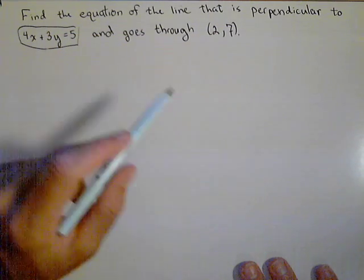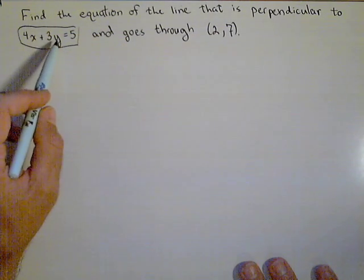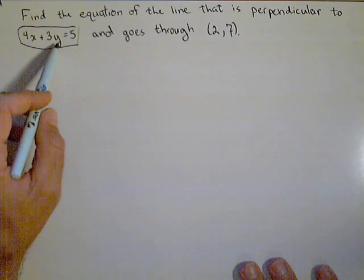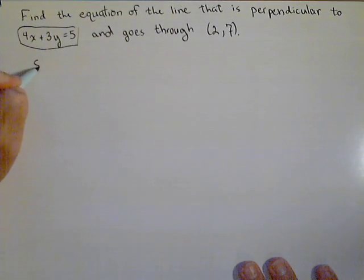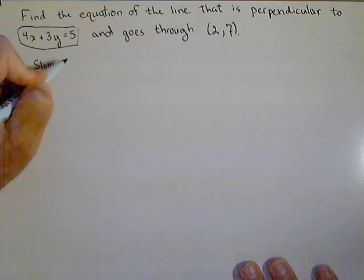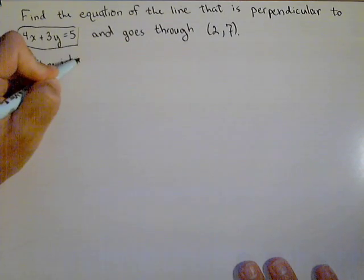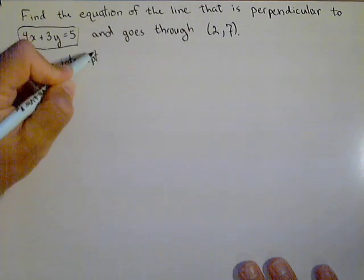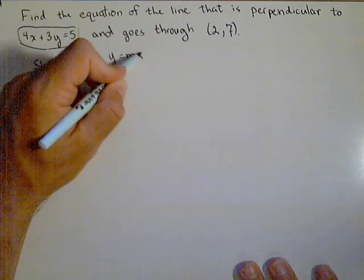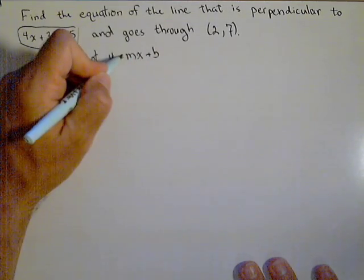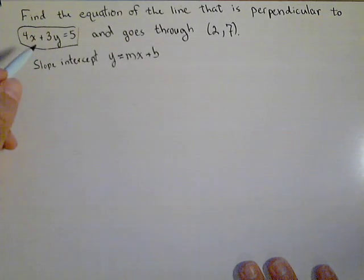There are a few different ways we can find the slope, but an easy one is if we can solve this for y, because then we'll be in slope-intercept form and we can identify the slope really quickly. Recall that slope-intercept form looks like y equals mx plus b. So by having it y equals, we can identify the slope.